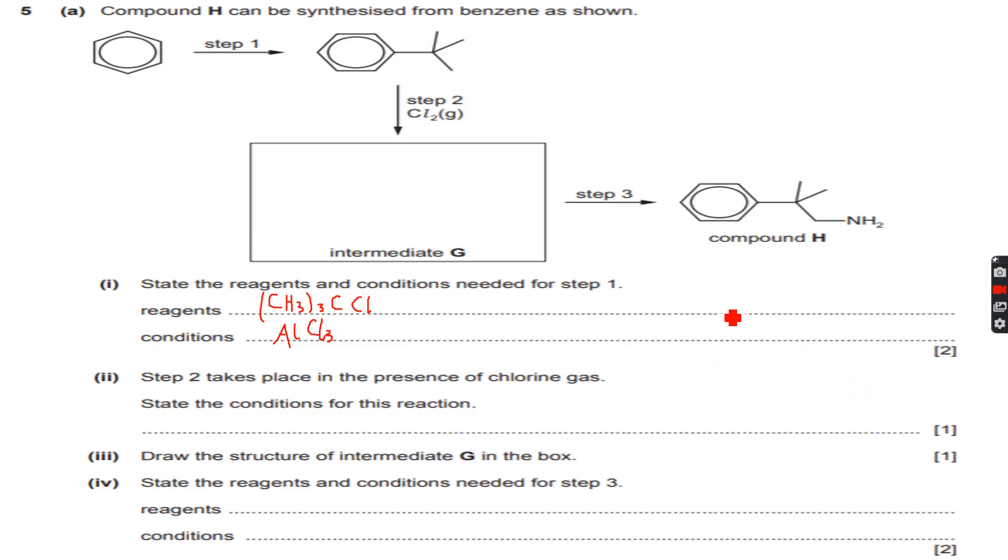If you don't know about the Friedel-Crafts alkylation reaction, go to that playlist and you'll get to know. We have done this. Now let's talk about step 2. Step 2 takes place in the presence of chlorine gas, so we are adding chlorine gas. Now is chlorine being added to the benzene ring or is it being added to the alkyl side chain? We don't know about that, so let's figure it out.